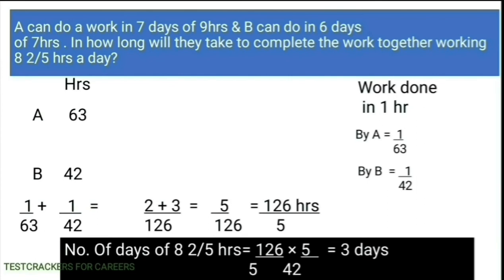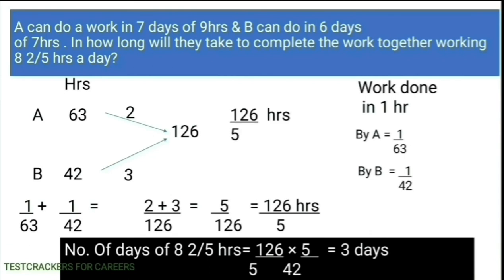Let us solve the problem by taking the LCM of 63 and 42, which is 126. The total units of work which has to be done by A and B is 126. A can do 2 units in 1 hour and B can do 3 units in 1 hour, so totally they can do 5 units in 1 hour. The time taken by A and B to do 126 units is 126 divided by 5 hours. If they work 8 and 2 by 5 hours a day, they will complete the work in 3 days — that is, 126 by 5 divided by 42 by 5 gives 3 days.